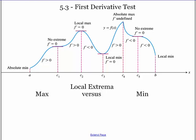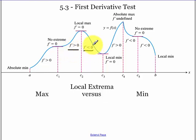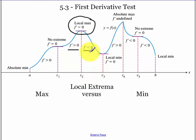Today we're going to be talking about the first derivative test. Looking at this picture, notice that we are increasing when our first derivative is positive. When the first derivative changes from positive to negative, we have a local maximum. And when our first derivative changes from negative to positive, our graph has a local minimum.